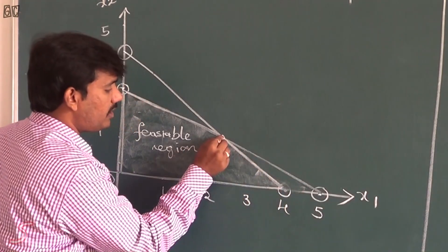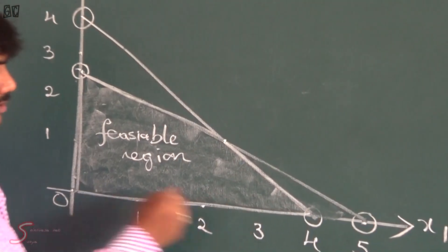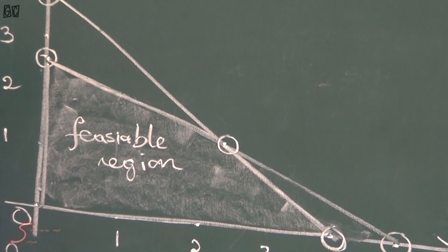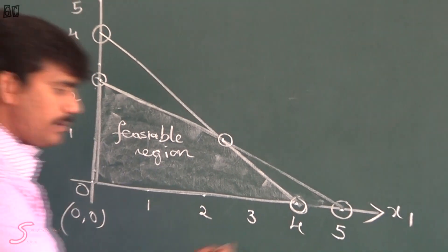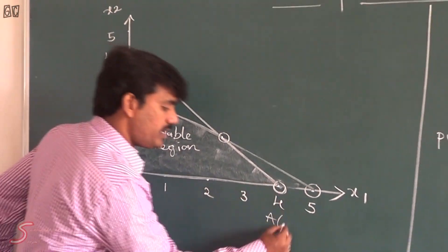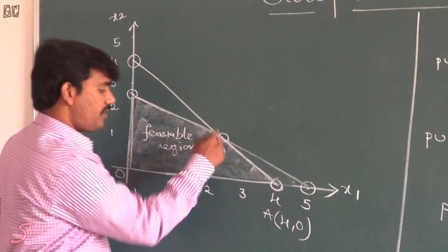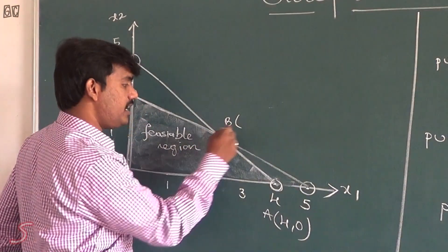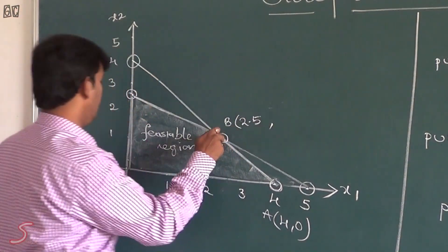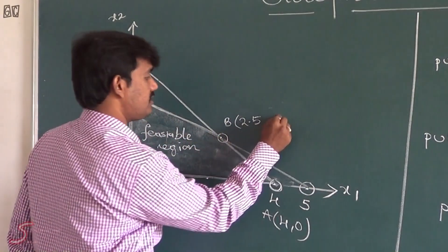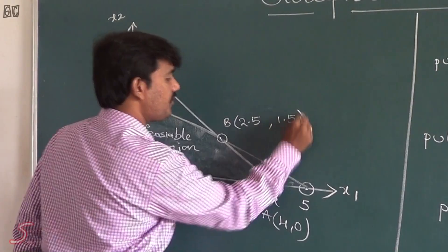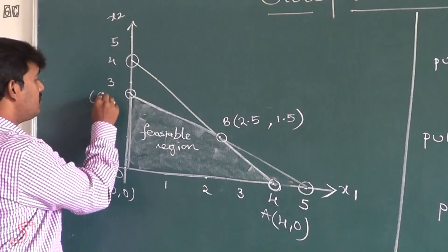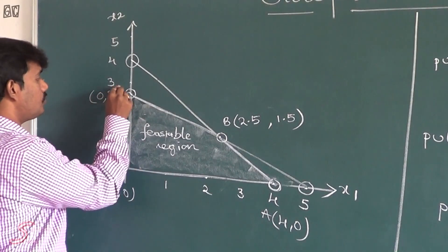This is the feasible region for these two constraints. We have corner points here: the origin (0, 0); point A at x1 is 4, x2 is 0; point B at approximately x1 is 2.5, x2 is 1.5 — the intersection of the two lines; and point C at x1 is 0, x2 is 2.5.